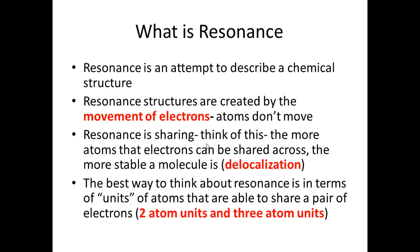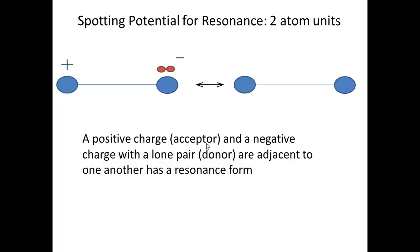When we look at ways to spot resonance, we talk about resonance in terms of two-atom or three-atom units. To do resonance you must have a donor and an acceptor. The donor can be a lone pair of electrons or a pi bond, and the acceptor can be a pi bond or a positively charged atom. Here's an example of a two-atom resonance unit: I have a negative charge and a positive charge, and I can do resonance by pushing electrons between the two atoms to make a pi bond.